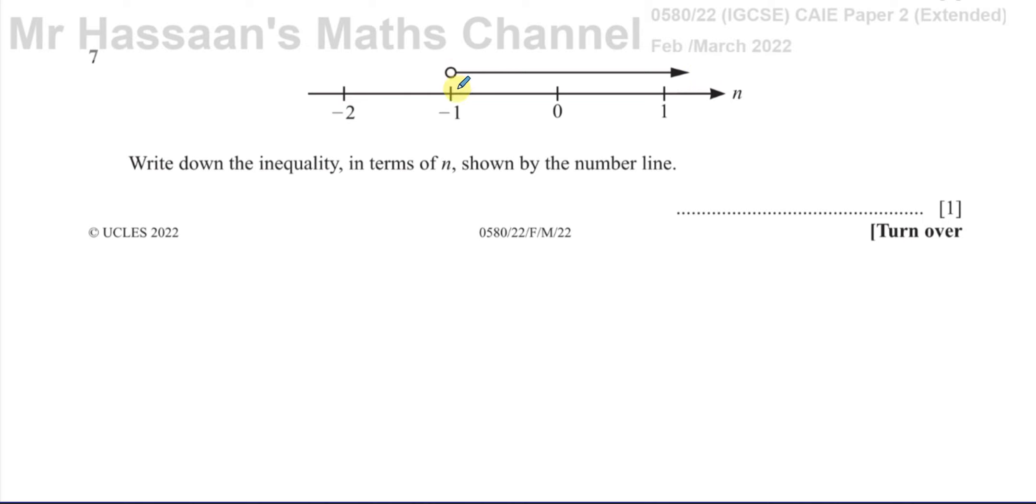But minus 1 itself is not included. If minus 1 is included, this would be like a closed circle, would be filled in, that would mean the minus 1 is included.